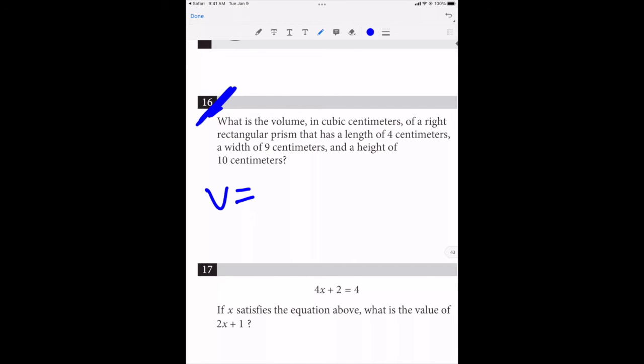The volume of a rectangular prism is simply length times width times height. That's it. So we just need to do 4 times 9 times 10. Four times nine is 36, and 36 times 10 is 360. That is it.